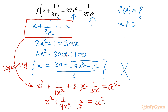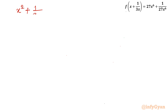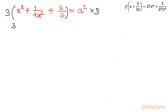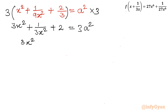Now it is not in the same format, so I will use one trick: multiply this equation by 3. So: 3·(x² + 1/9x² + 2/3) = 3a², which becomes 3x² + 1/3x² + 2 = 3a². Now taking away 2 from both sides gives 3x² + 1/3x² = 3a² - 2.